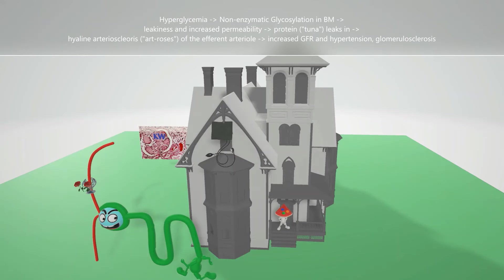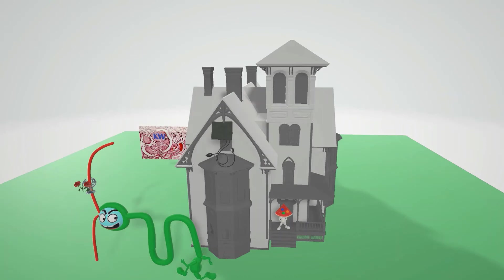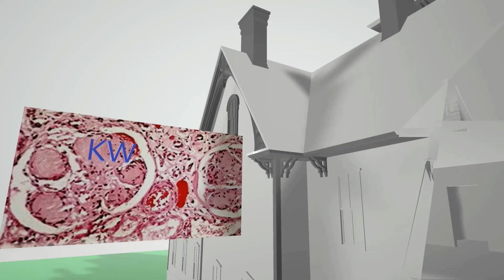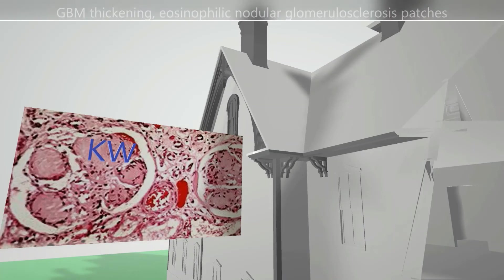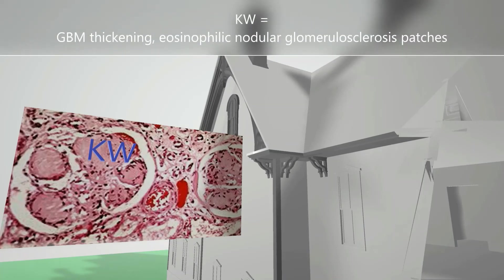If you take a look on histology you'll see the following. The glomerular nephron guy stuck a poster into the side of the house with his initials KW, because his name is Kimmelstiel-Wilson. This reminds us of the Kimmelstiel-Wilson lesions seen on histology, in which there are eosinophilic nodular glomerular sclerosis patches, as we can see over here.